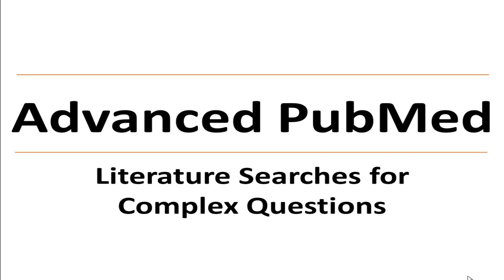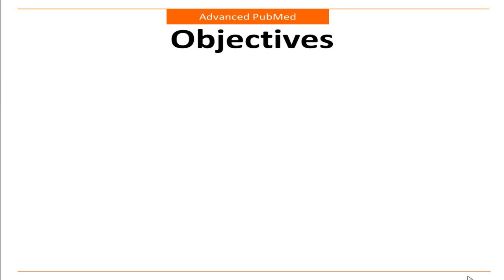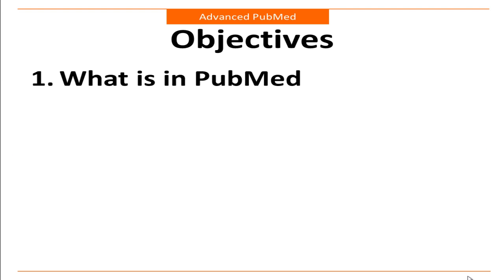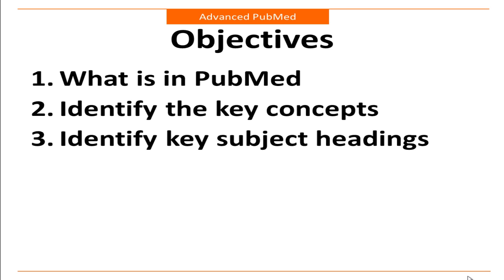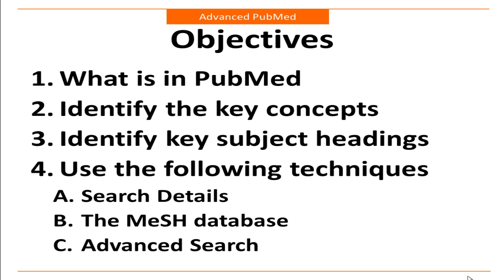Video 3 covered how to do a simple search in PubMed. Sometimes you may find that a simple search does not retrieve relevant articles. When this happens, you may need to conduct a more advanced search. This video covers what is in PubMed, how to identify the key concepts in your topic, how to identify subject headings relevant to your topic, and how to use some PubMed search tools, including search details, the MeSH database, and advanced search.